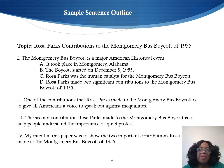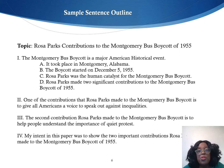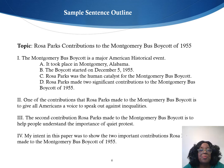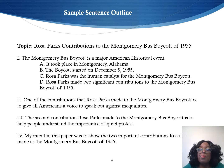This is my sample sentence outline. The title of my topic: Rosa Parks' Contributions to the Montgomery Bus Boycott of 1955. Now, in the research process I could have changed this, but I did not. So, my topic remains Rosa Parks' Contributions to the Montgomery Bus Boycott of 1955.